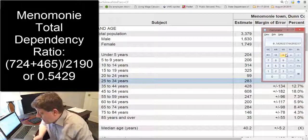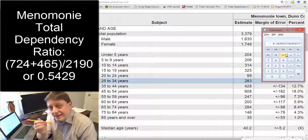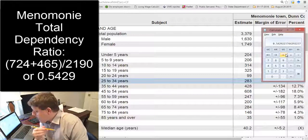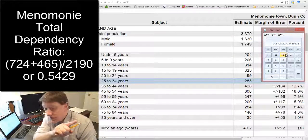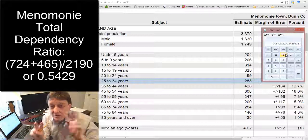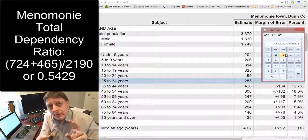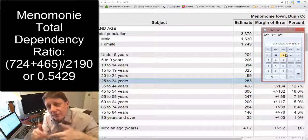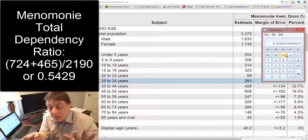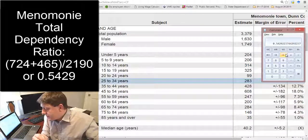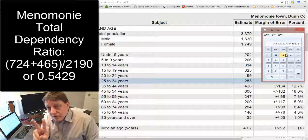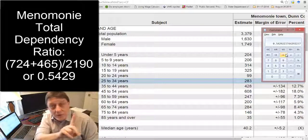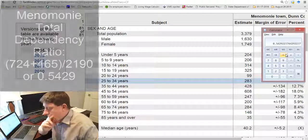What does that mean? It means that for every one person who is of a non-working age, there are almost two people, because it's a little over 0.5, almost two people who are of working age. Okay. Almost two. So almost two people supporting every one person who's dependent. That's good to know.